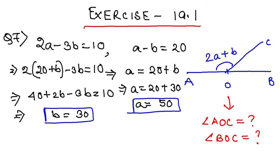Once I know this, I can find angle AOC. Angle AOC equals 2a plus b, which is 2 times 50 plus 30, giving us 130. Finally, I'll write 130 degrees. Clear till then?